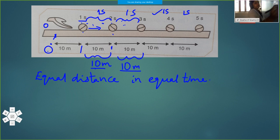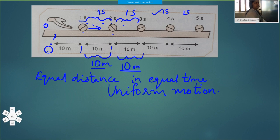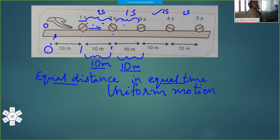So we can call the motion of the ball uniform motion. The ball covers equal distance in equal intervals of time, so the ball is in uniform motion.